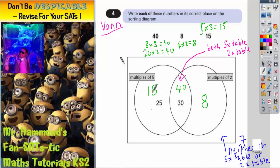And there's your 3 answers. 15 goes in the left circle. 40 in the overlapping bit. 8 in the right circle.